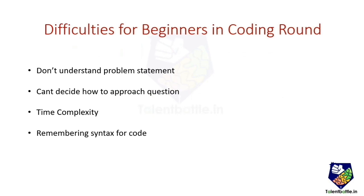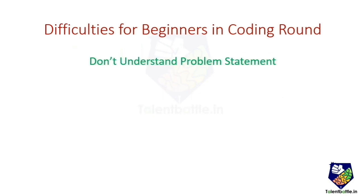These are the issues we will look at, and I will explain each one of them one by one. The first common difficulty faced by students is that they don't understand the problem statement itself. The reason is that college programming assignments are restricted to one or two lines where what you have to do is directly given — for example, write a program to find prime numbers up to 100, or reverse a given string.